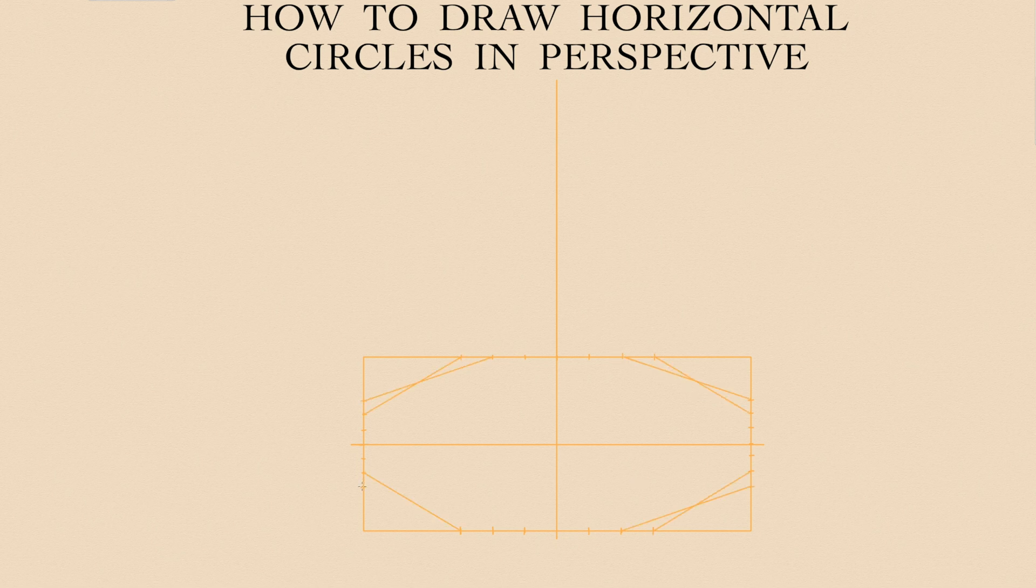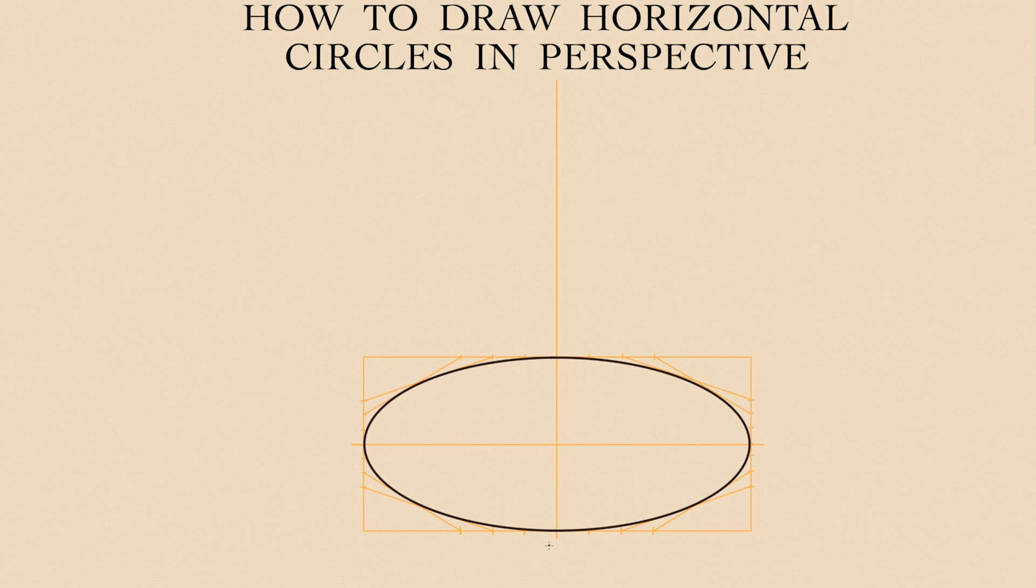When you divide any rectangle into four quadrants and its lateral halves into three parts, a perfect ellipse can be inscribed into this geometry.